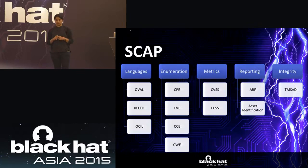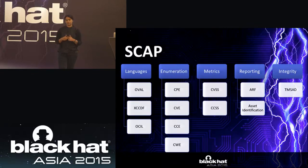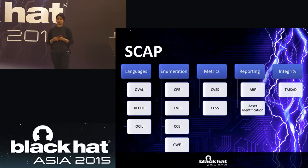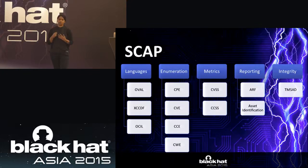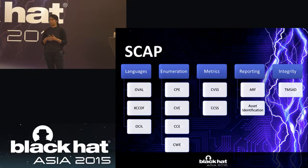There are also languages: OVAL, Open Vulnerability Assessment Language, is a way to detect vulnerabilities in your system. XCCDF is for benchmarking security posture — checking policies using OVAL. And OCIL is an interactive language for anything that cannot be done automatically, allowing security administrators to answer a questionnaire — for example, manually entering a device serial number.